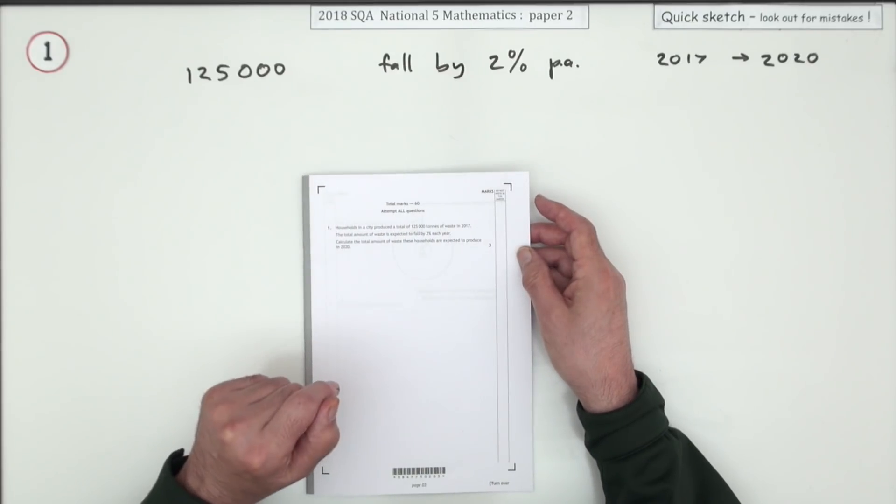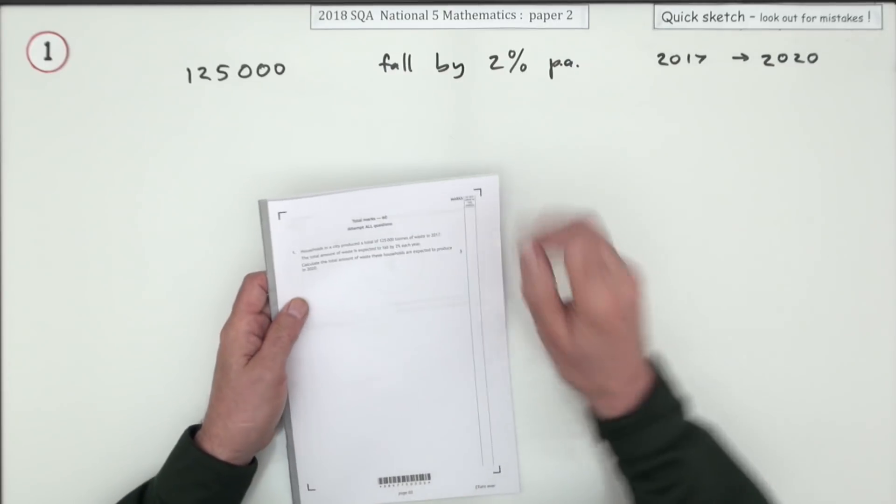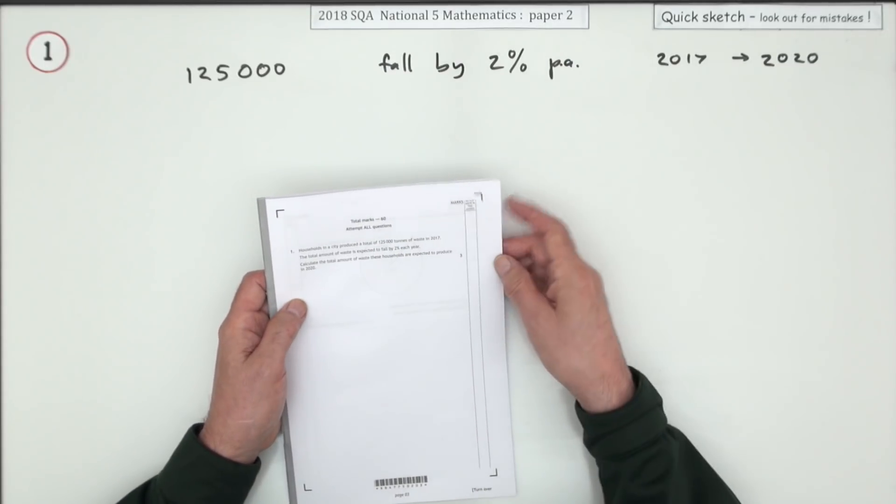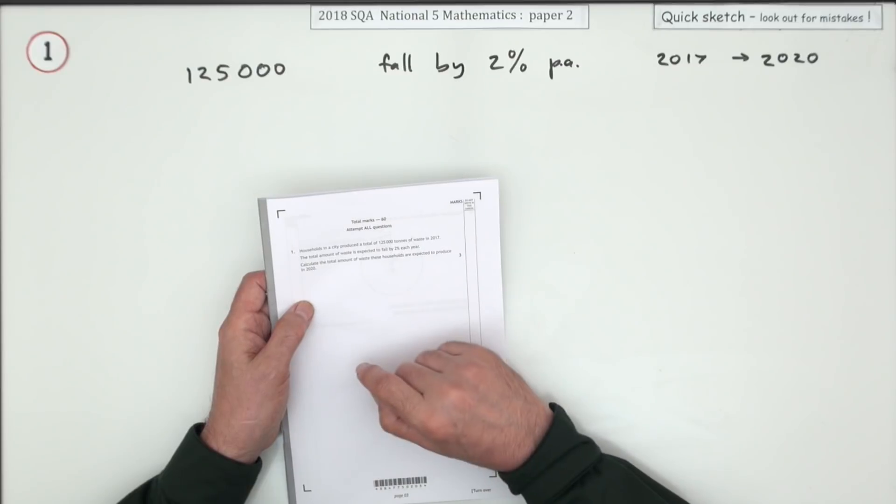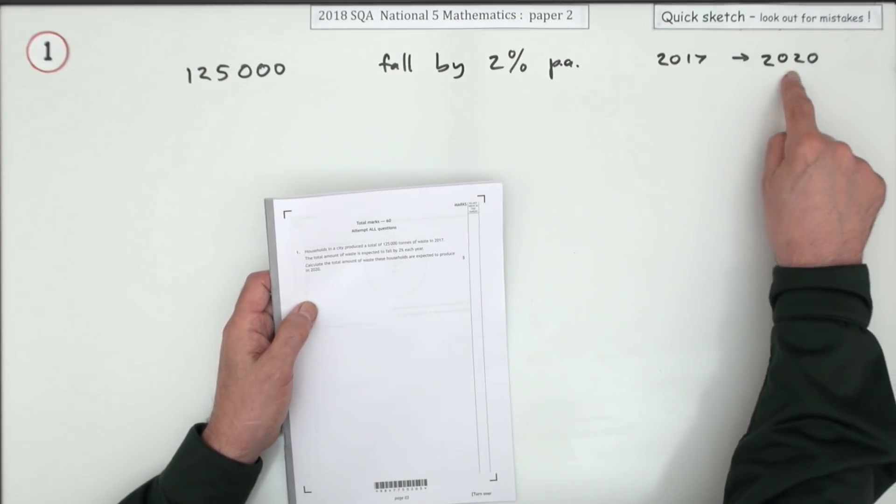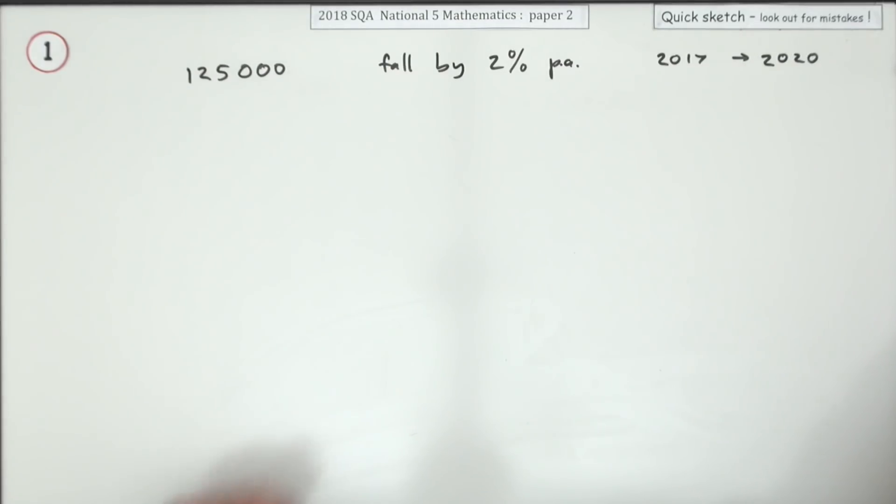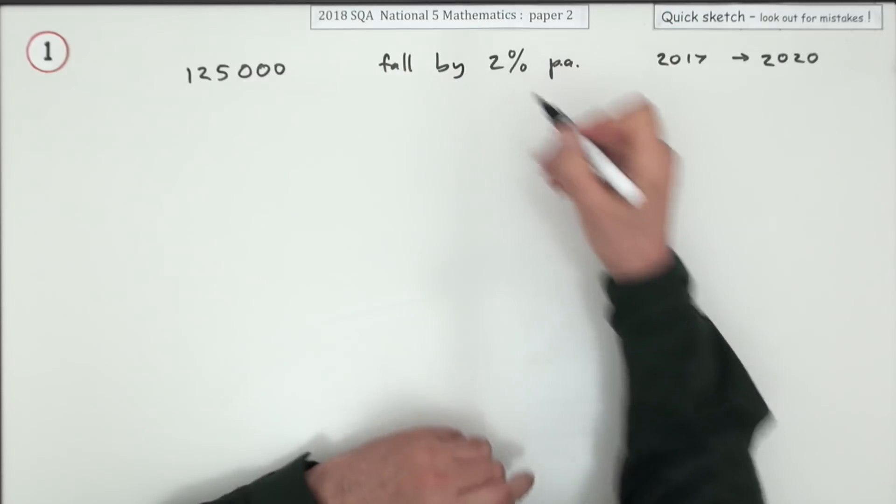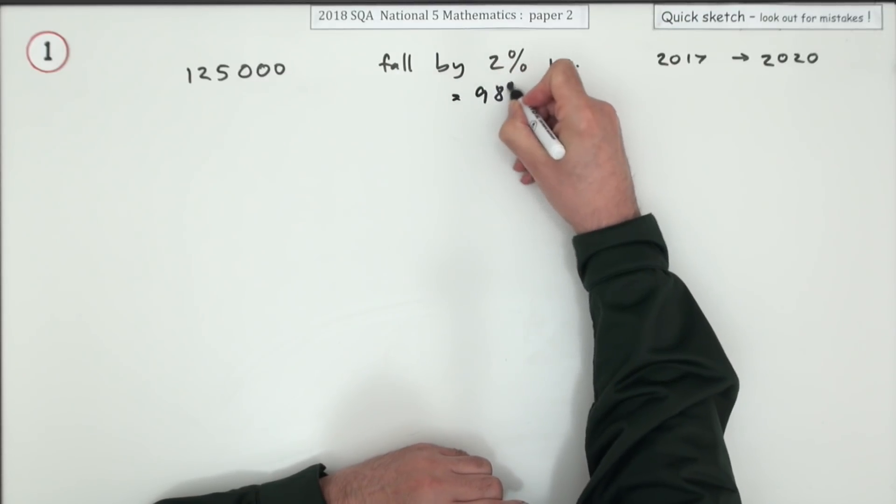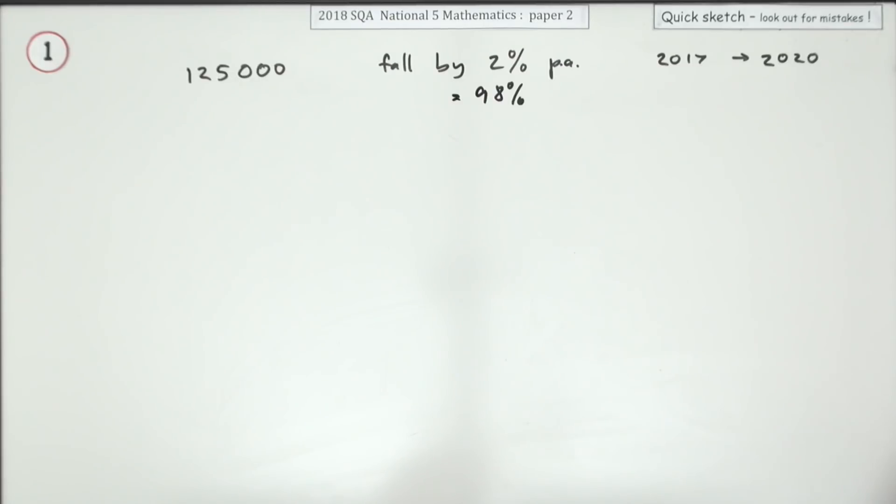Households produce 125,000 tonnes of waste in 2017. If it falls by 2% a year, how much waste would be expected in 2020? Well if it falls by 2% it means it's down to 98% of the previous year.